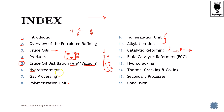Then we continue with hydro treatment, which is the removal of sulfur and other impurities. Then gas processing, mostly for gases leaving the refinery — LPG, butanes, propanes, and other materials like C1 and C2 which are later going to be used as fuel gases.